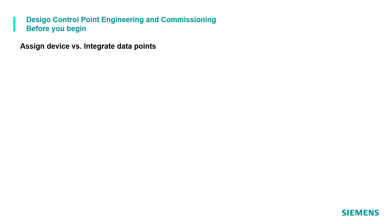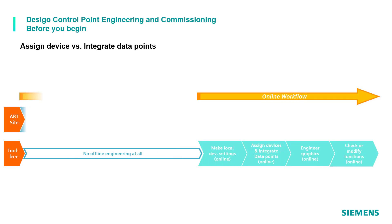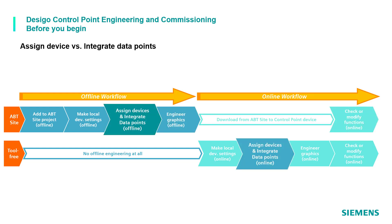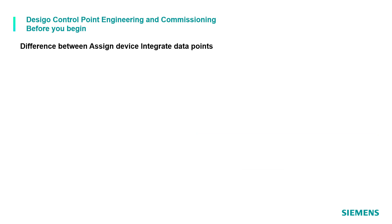In general, we distinguish between two main workflows for engineering: the tool-free workflow, which we can call the online workflow, and the engineering with ABT site, or offline workflow. In both cases, devices need to be assigned and data points need to be integrated. We are now going to learn the difference between assigning devices and integrating data points.